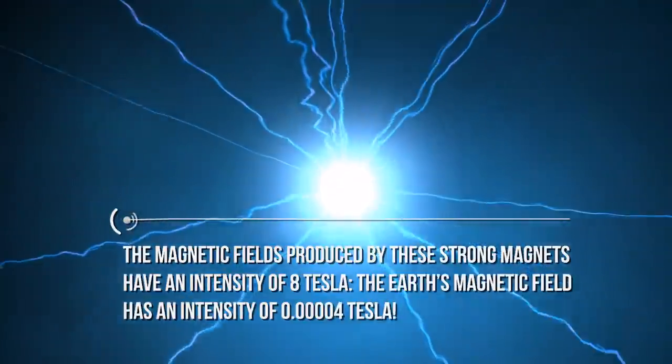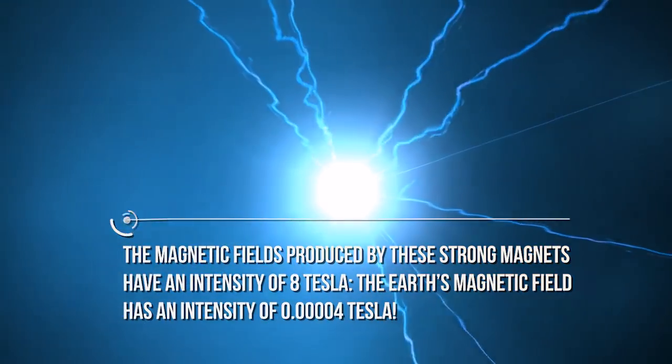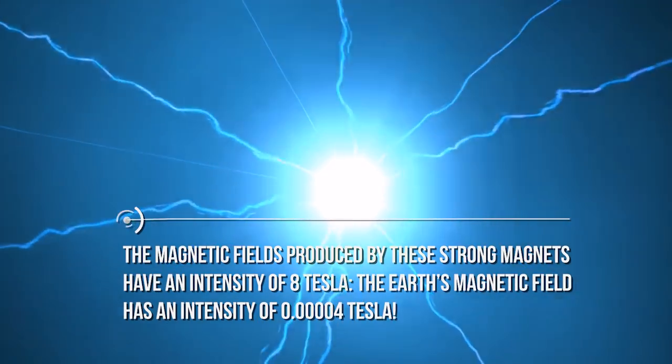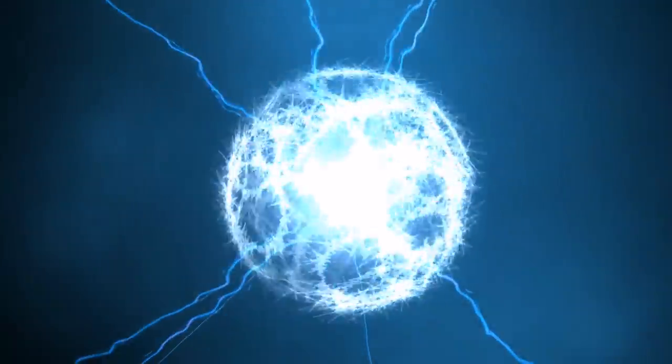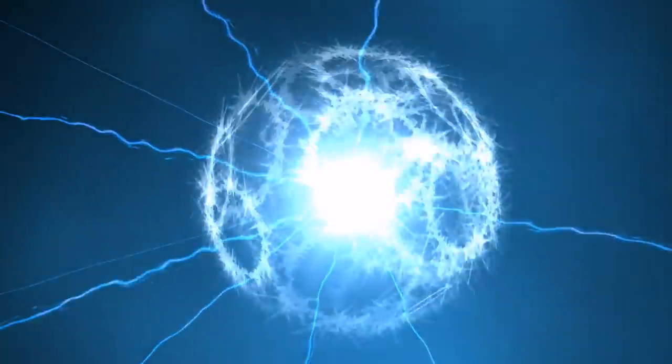The magnetic fields produced by these strong magnets have an intensity of 8 tesla. To give you an idea of how strong this is, the Earth's magnetic field has an intensity of 0.00004 tesla. Thanks to the thousands of magnets placed all along the ring, scientists are able to keep the proton beams along their circular path.